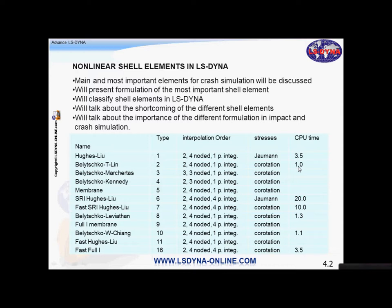Then you have two triangular shell elements: type 3 is bilinear, and type 4 is the Belytschko-Kennedy bilinear element. Type 3 uses a kind of higher-order interpolation similar to a beam — it is historical from Dyna 3D. However, the preferred triangular shell element is the Belytschko-Kennedy type 4 element.